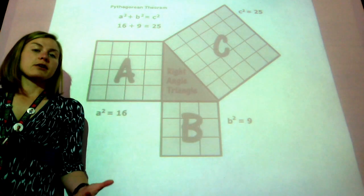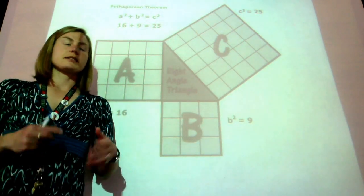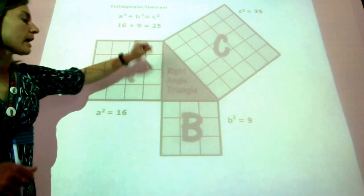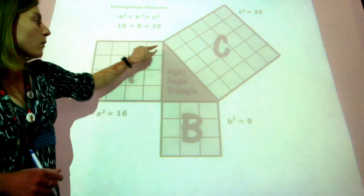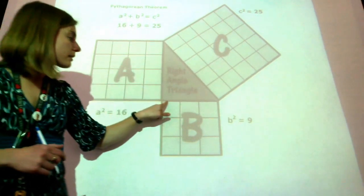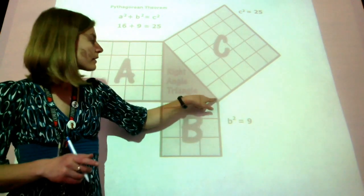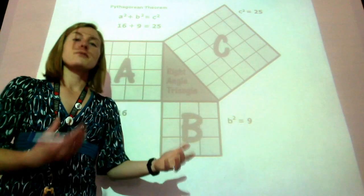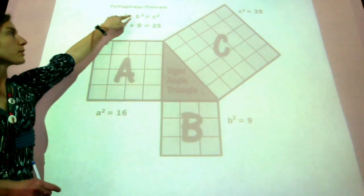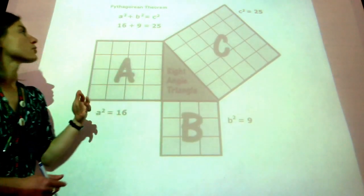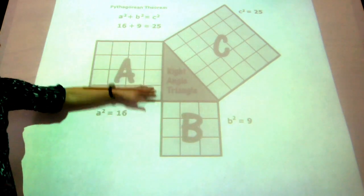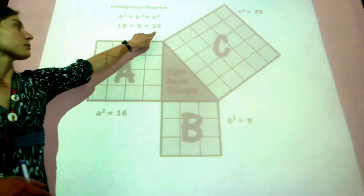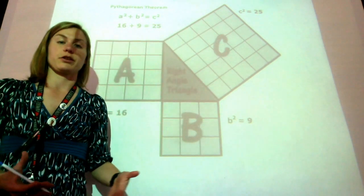This might look familiar — we've gone over this before. We have a right triangle where this side length is four, this side length is three, and the hypotenuse is five. The formula says a squared plus b squared equals c squared, so if we take four and square it we get 16, three squared gives us nine, and five squared equals 25, and these are going to be equal to each other.